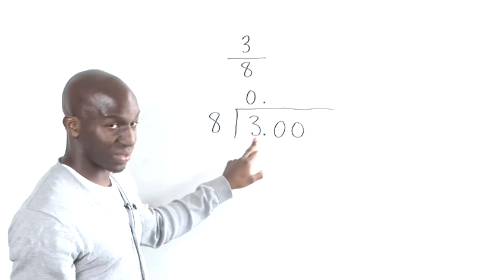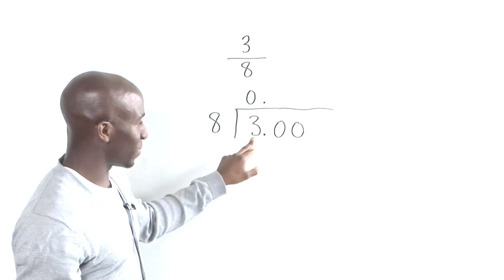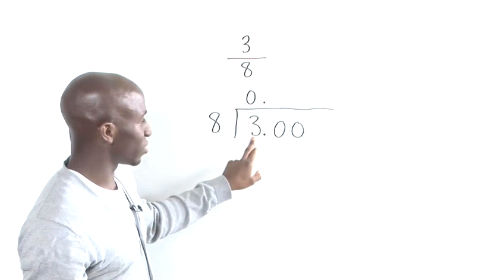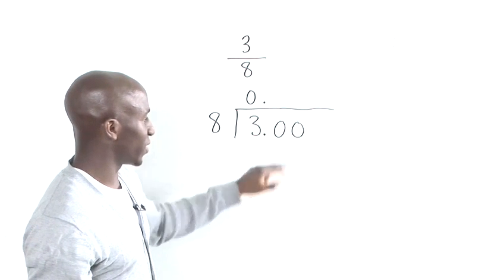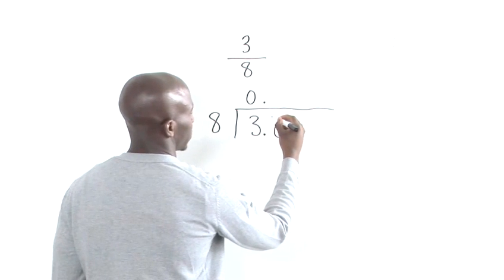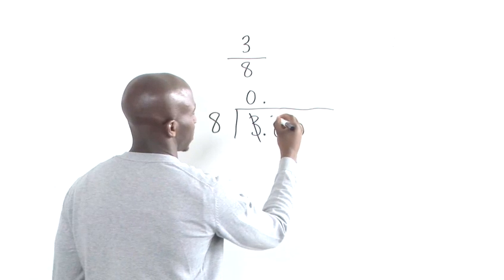Now, as you can see, the 8 was unable to go into the 3. So, what the 3 now becomes is a remainder. So, the remainder goes on the top left-hand corner of the first zero. So, to make 30.